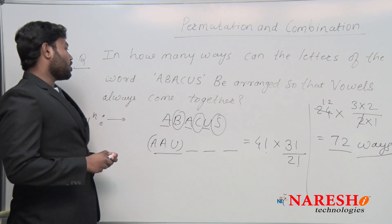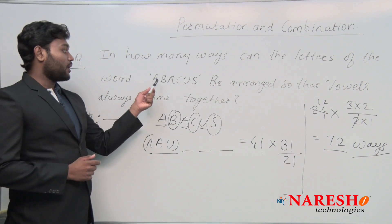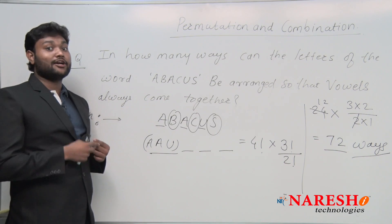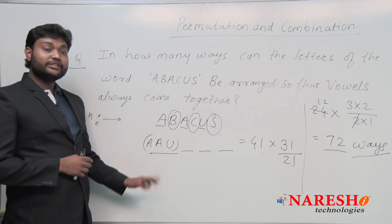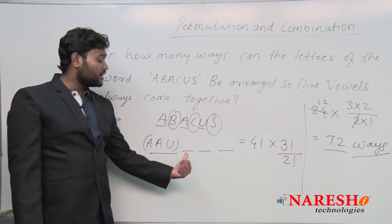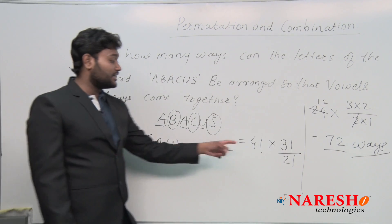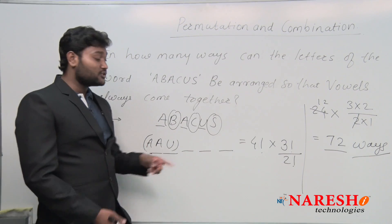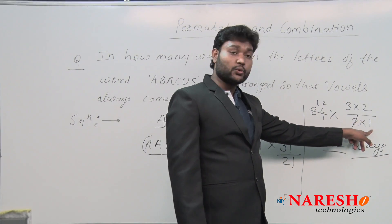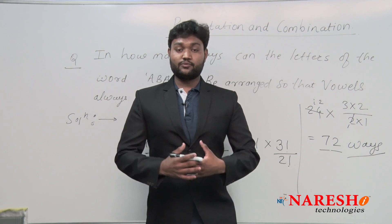To recap: ABACUS has six letters, with three vowels — A, A, U — and three consonants. Considering all vowels as one unit gives us four total units, arranged in 4! ways. Multiplying by 3! for the arrangement of vowels within the unit, and dividing by 2! for the repeated A: 4! × 3! / 2! = 24 × 3 = 72. The total number of possible arrangements is 72.